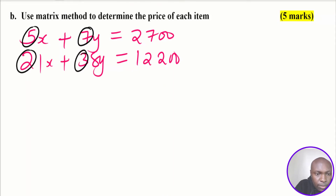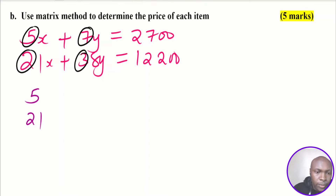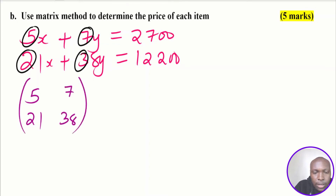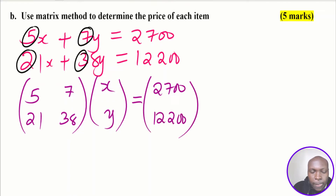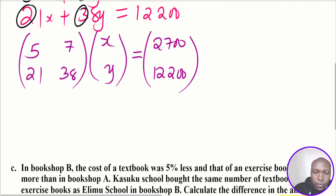Extracting the coefficients, the matrix form is: the coefficient matrix with first column [5, 21] for X and second column [7, 38] for Y, multiplied by the variable matrix [X, Y], equals the constants matrix [2700, 12200]. This is the simultaneous equation we solve using the matrix method.